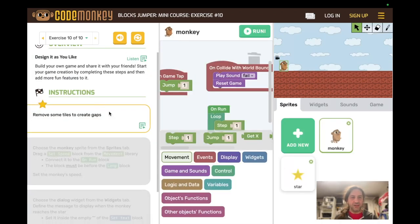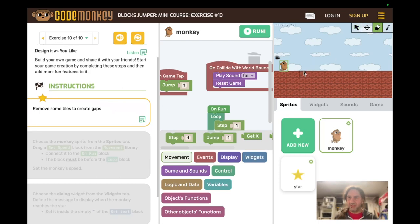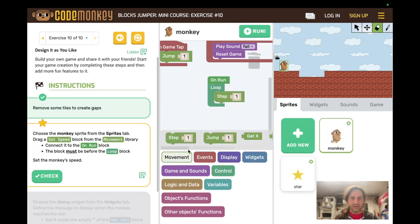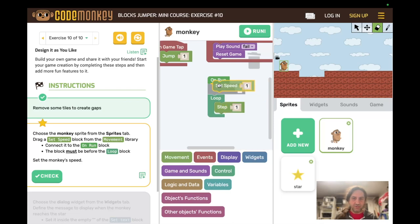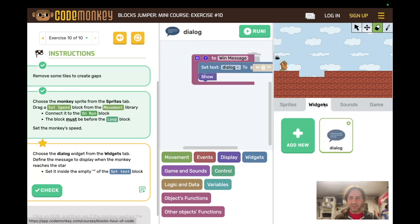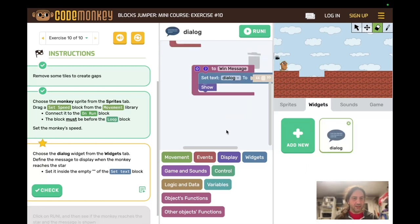So now remove some tiles to create gaps. We'll just do a minimal. Okay, we did that. Now make sure monkey is selected and drag set speed from the movement block connected to the on run block. So we've done this before, but we're doing it again. Movement library. Set speed. Again, before the loop. And we, it sounds like we can set any speed. So let's make this two and see how fast it goes. Then choose the dialog widget from the widgets tab. So widgets, dialog.